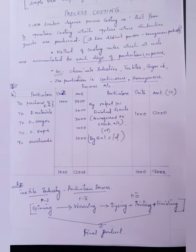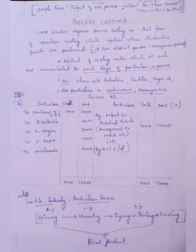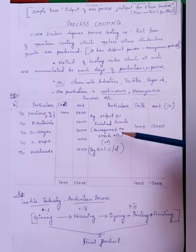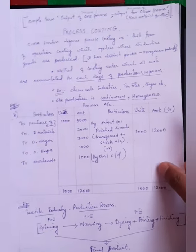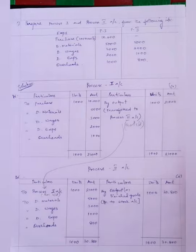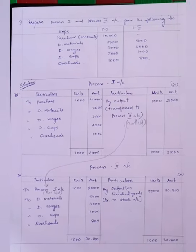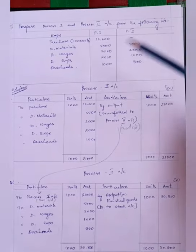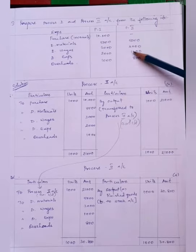Thank you. Good afternoon students. In the previous video, we saw what is process costing and how to prepare a process account with one process. Now we are going to prepare a process account which has two processes — meaning the production has two processes. Prepare a process 1 and process 2 account from the following information. The expenses of process 1 as well as process 2 are given. For process 1, we purchased 1,000 units costing Rs. 10,000.